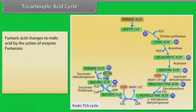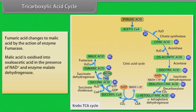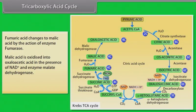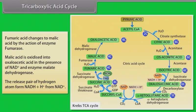Fumaric acid changes to malic acid by the action of enzyme fumarase. Malic acid is oxidized into oxaloacetic acid in the presence of NAD⁺ and enzyme malate dehydrogenase. The released pair of hydrogen atoms forms NADH+H⁺ from NAD⁺.